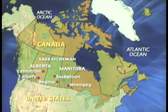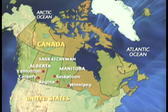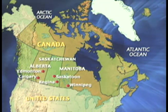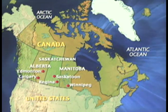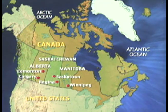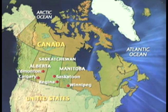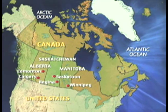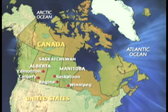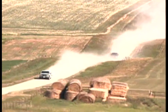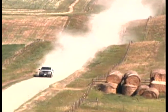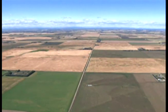Large areas of these provinces are sparsely populated. Most people reside in Calgary and Edmonton in Alberta, Winnipeg in Manitoba, and Saskatoon and Regina in Saskatchewan. Like the United States Midwest, much of this land in the southern regions of the Prairie Provinces was once a grass-covered prairie, but today it is covered in farms.